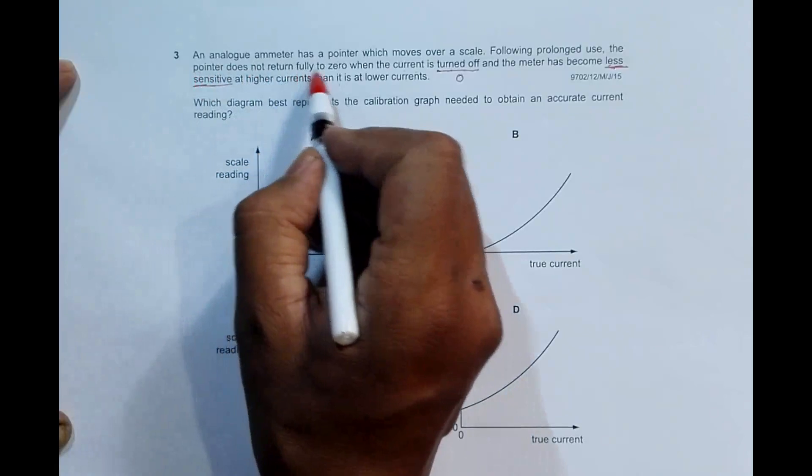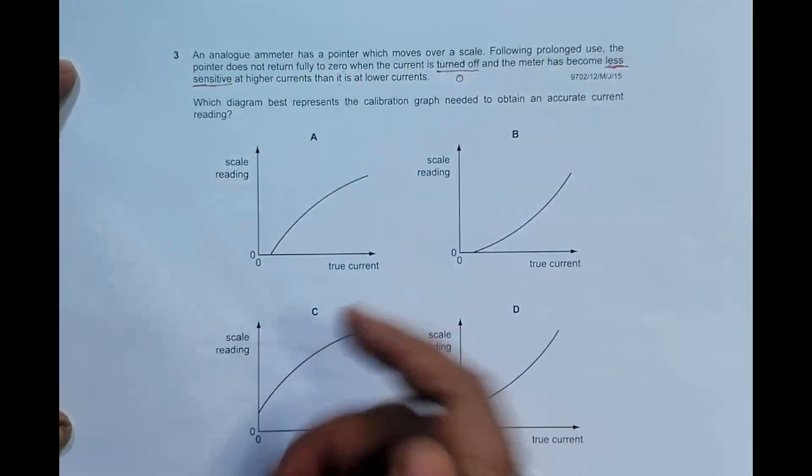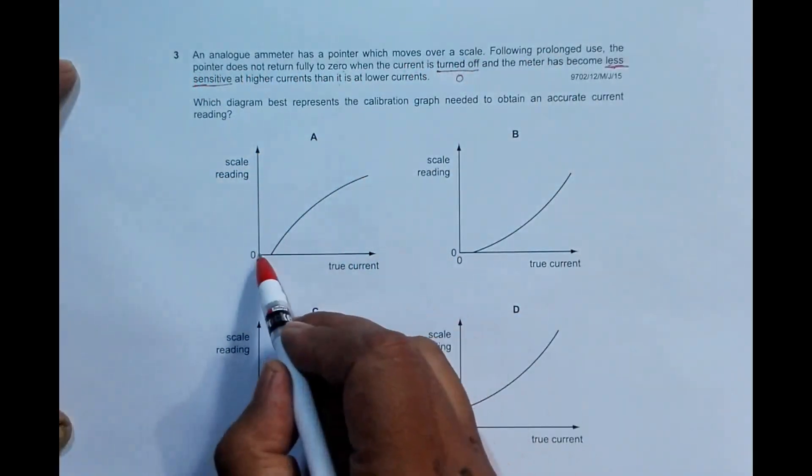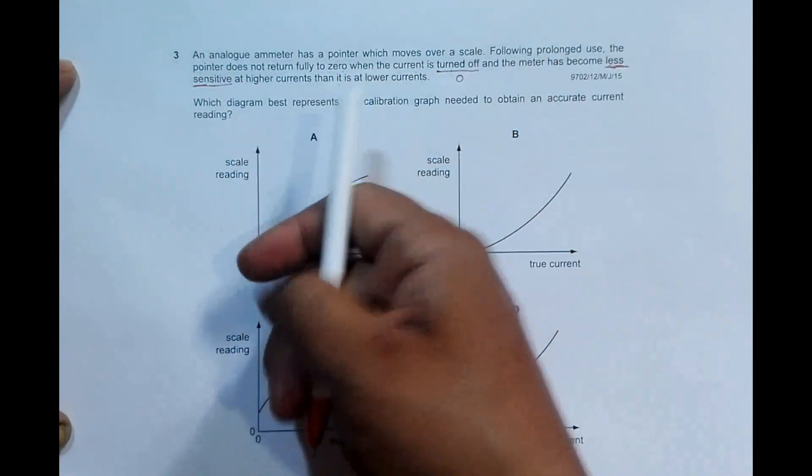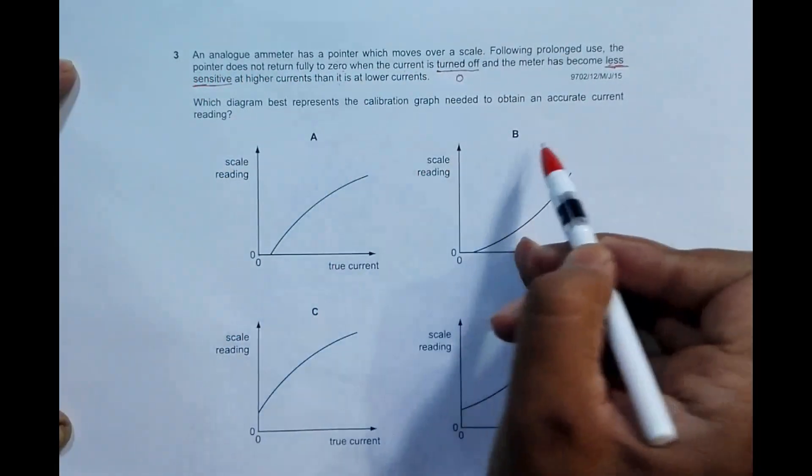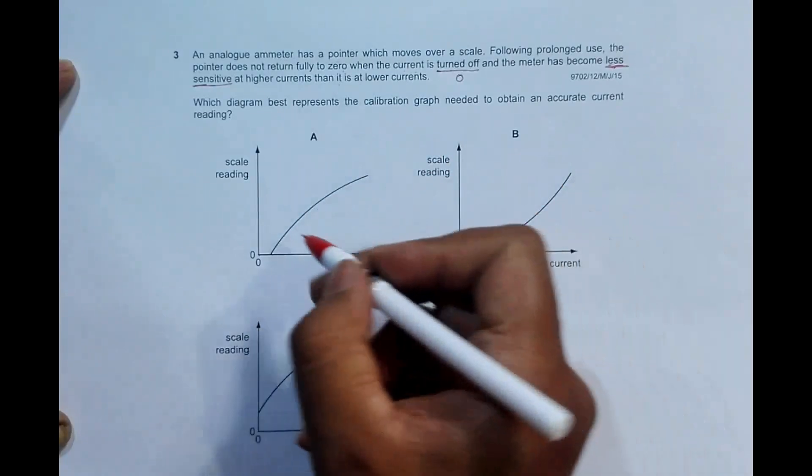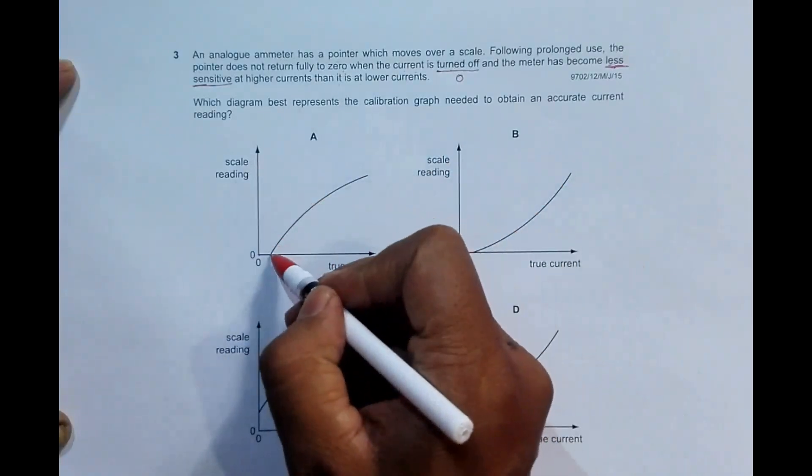So when current is zero, the scale reading is not zero. That means choice A and B do not qualify because here the scale reading is already zero. So these disqualify.